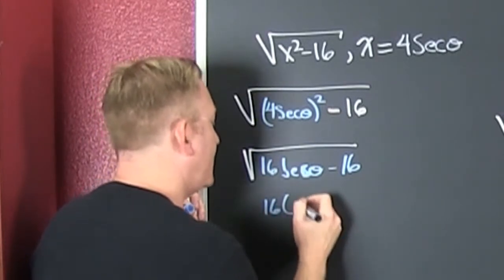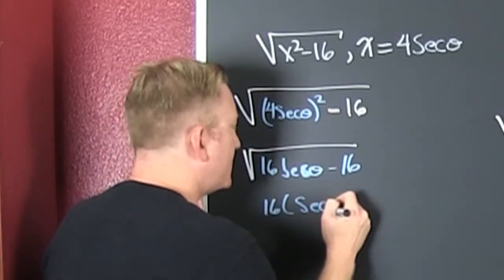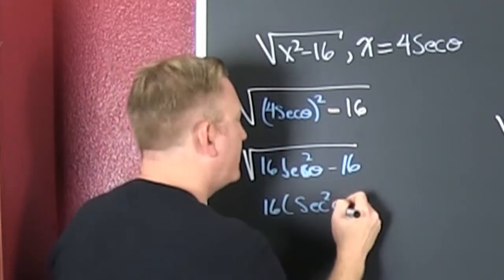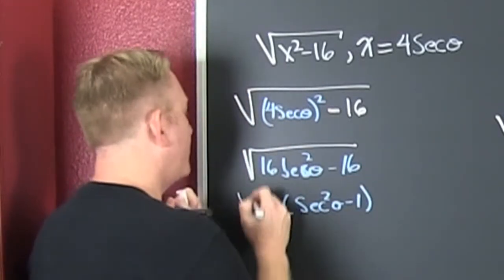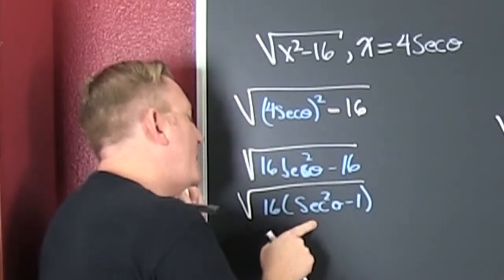Alright, so I pull out that 16, and I have the secant - wait, that should be a square right there. Theta squared minus 1. Fun. And then what? I still have that under the root. But wait, there's more.